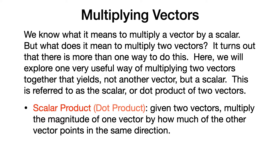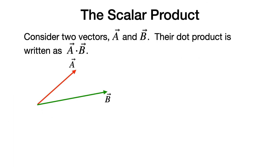This operation is referred to as a scalar product, or dot product, of two vectors. It is defined as follows: given two vectors, multiply the magnitude of one vector by how much of the other vector points in the same direction. For example, consider two vectors a and b. Their dot product is written as a dot b. If theta is the angle between the two vectors, then the component of a in the direction of b is simply the magnitude of a times the cosine of theta.